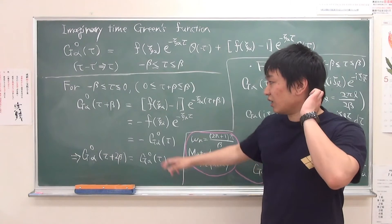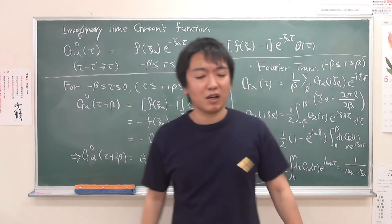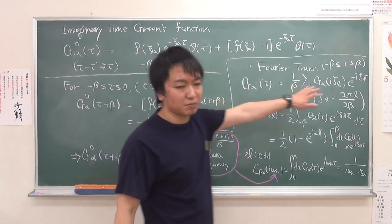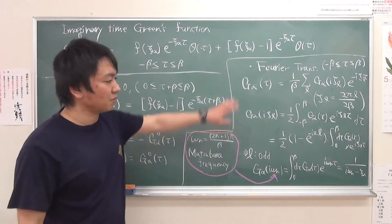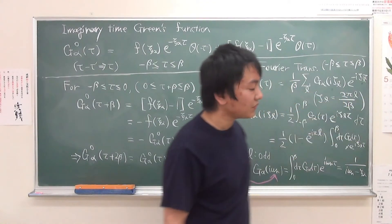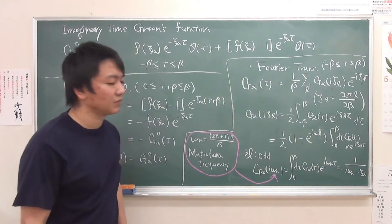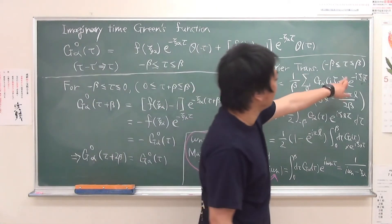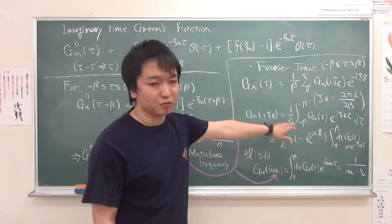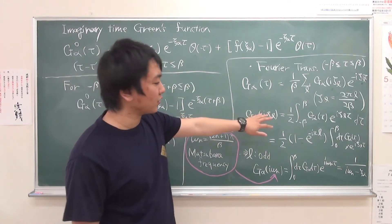And then this property is useful to consider the Fourier expansion of this imaginary time Green's function. Now this is a Fourier expansion of the imaginary time Green's function. Now theta_L is given by like this, and L is now integer. Then this coefficient, expansion coefficient, can be obtained by taking integration with respect to tau of G(tau). This is nothing but inverse transformation.